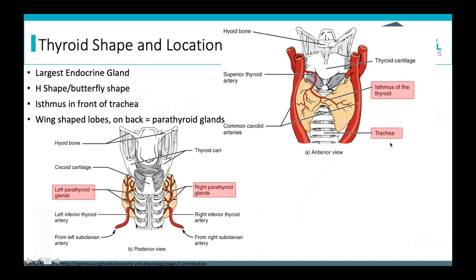The lobes are butterfly-shaped or wing-shaped. Looking at the posterior view of the lobes, we can see some additional endocrine glands called the parathyroid glands — two on the left and two on the right for a total of four.